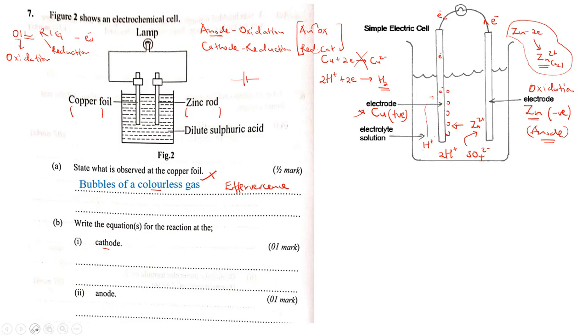At the cathode, we shall have this other reaction whereby we are producing hydrogen gas. The equation at the cathode will be the hydrogen ions will pick two electrons to form hydrogen gas, which will be seen as bubbles of a colorless gas. At our anode, we shall have zinc losing two electrons to produce zinc ions. We prefer adding electrons, but this is also acceptable. Usually, we don't like subtracting electrons. That's why we bring the two electrons to the right hand side.